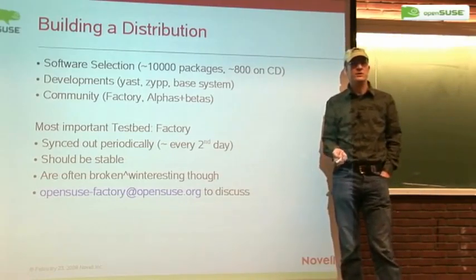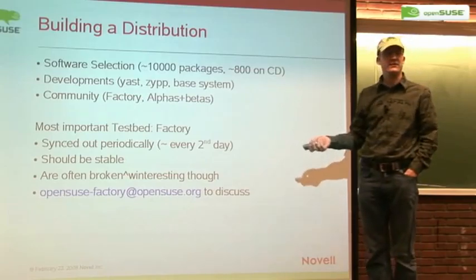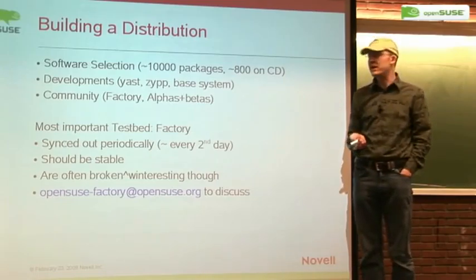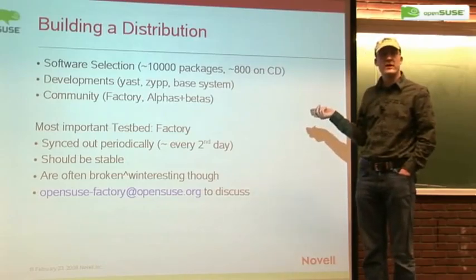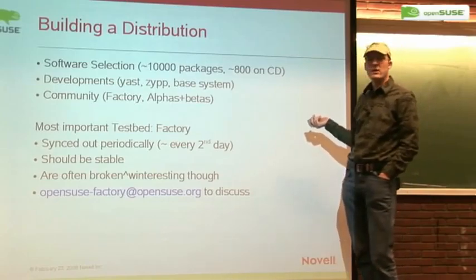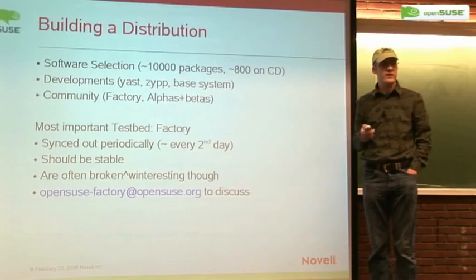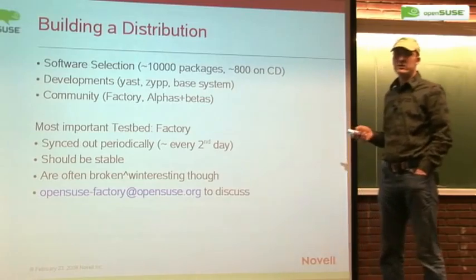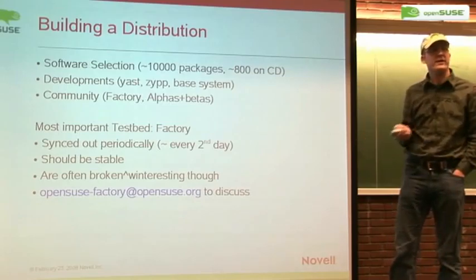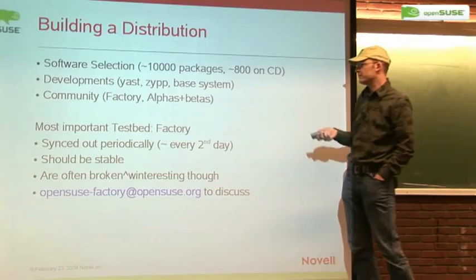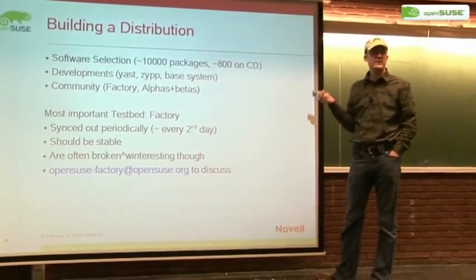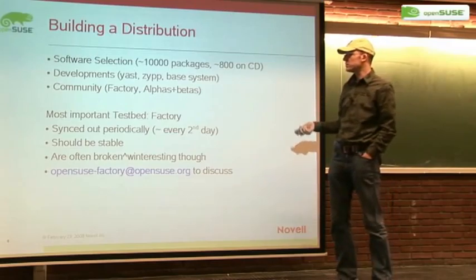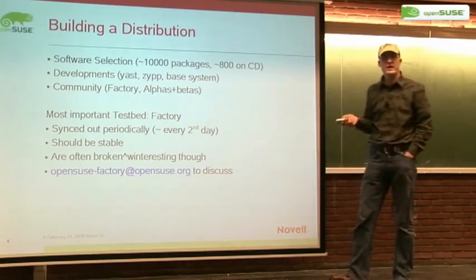Specific developments that we are doing for OpenSUSE make up the distribution — like YaST, which is still very unique even though it's open source and some distributions use it. We have CIRC, which is our software update stack. We have developments in the base system. And the community itself makes up a distribution — we get factory trees tested from the community, and we have alphas and betas that are tested and contributed to.